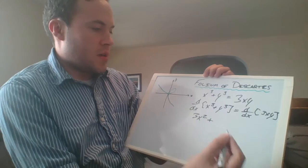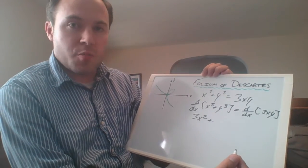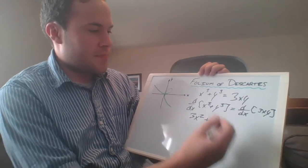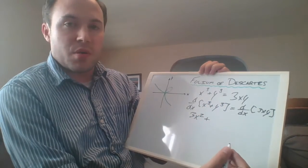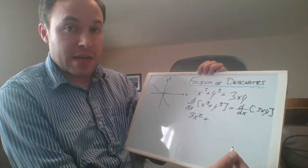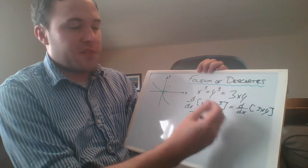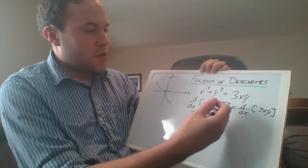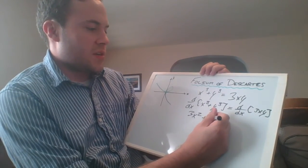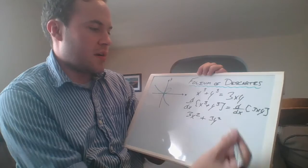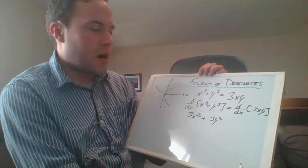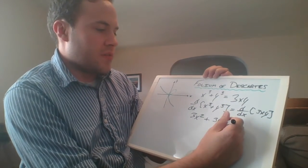The derivative of y cubed, this is really just a chain rule problem. The inside function is y, we're thinking of that as a function of x, and the outside function is the function that cubes things. So the derivative of the outside function is 3y squared because we have to leave y in there, and the derivative of the inside function is just y prime.